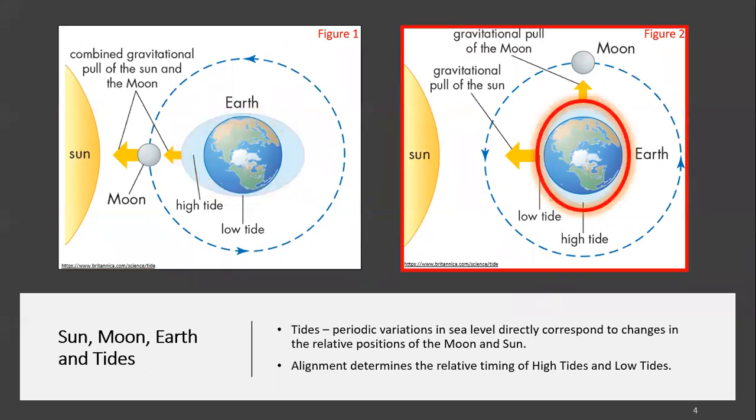As depicted in figure two, when the moon aligns at a right angle perpendicular to the sun-Earth plane, the gravitational forces will result in an accumulation or high tide and a depletion or low tide perpendicular to the sun-Earth plane. However, notice that tidal minimums and maximums are not as extreme during this orientation.